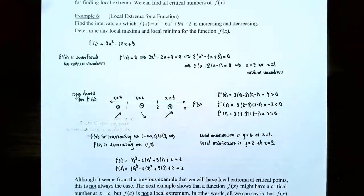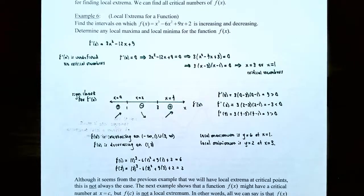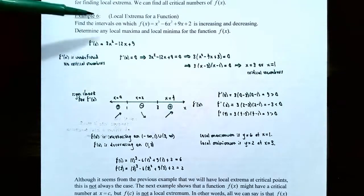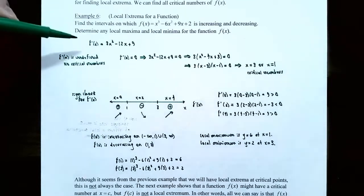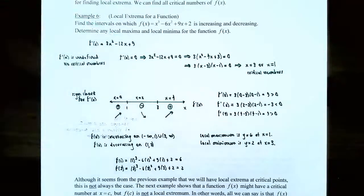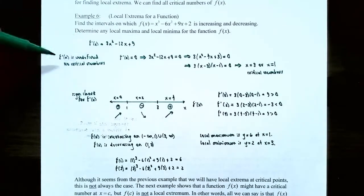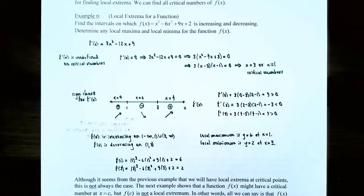Example 6: Local extrema for a function. Find the intervals on which f(x) = x³ − 6x² + 9x + 2 is increasing and decreasing, and determine any local maxima or minima. The first step is to find the derivative: f'(x) = 3x² − 12x + 9, using the sum, difference, power, and constant multiple rules. Since this function is a polynomial, f'(x) is undefined never occurs, so there are no critical numbers from that condition.